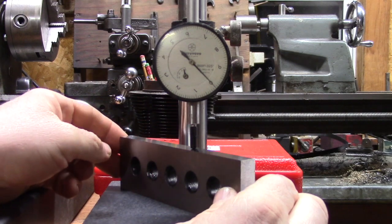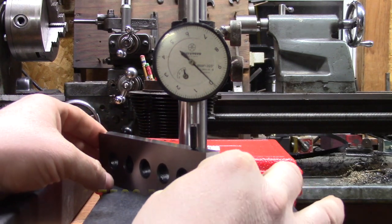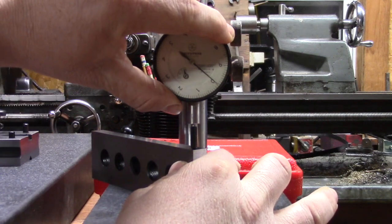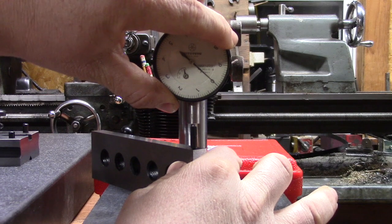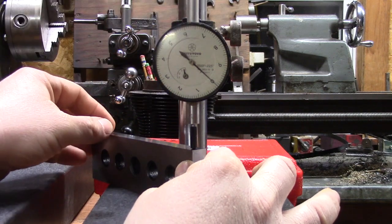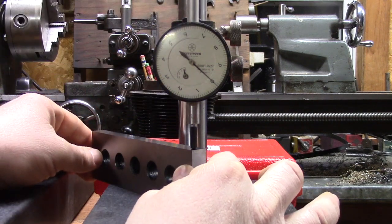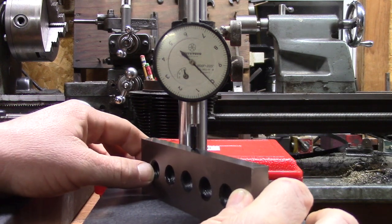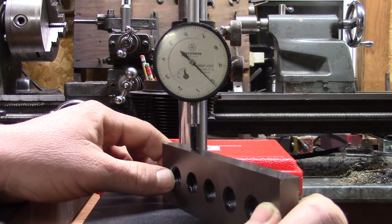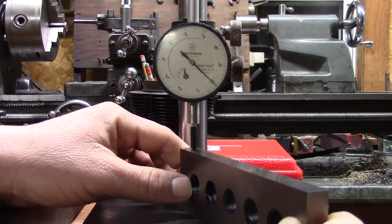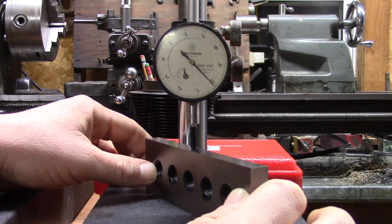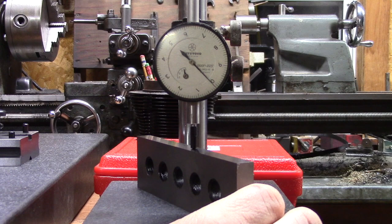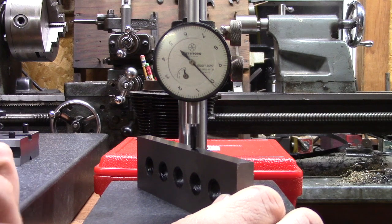Let's test the second inch and three-quarter parallel. I'm going to set a zero here. I'm going to set a solid zero. And again, we're just at one tenth variation on this parallel. So it passes Grizzly's claims.